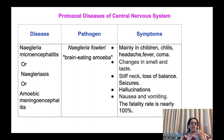Another protozoal disease of the central nervous system is caused by Naegleria fowleri, also called the brain-eating amoeba. The disease is called Naegleria meningoencephalitis or Naegleriasis, sometimes also called amoebic meningoencephalitis. Mainly in children, infection occurs when Naegleria fowleri is present in pond water — during swimming or playing in pond water they acquire the infection. Symptoms include chills, headache, fever, coma, changes in smell and taste, stiff neck, loss of balance, seizures, hallucinations, nausea, and vomiting. Fatality rate is very high, up to 100%.